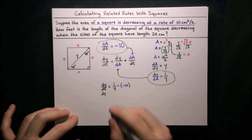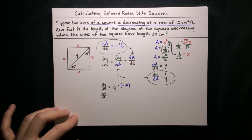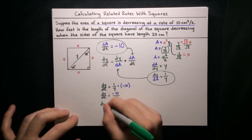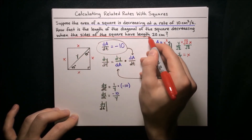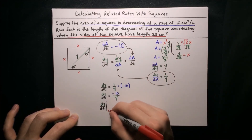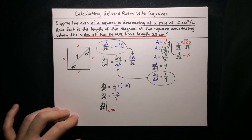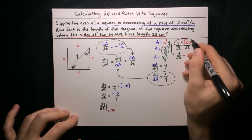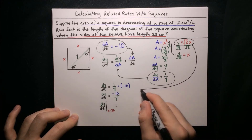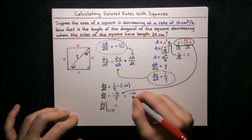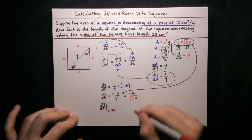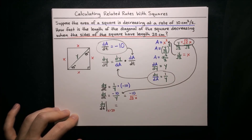Putting this together: dy/dt equals dy/dA times dA/dt, which is 1 over y times negative 10. So dy/dt equals negative 10 over y. We want to find dy/dt when the sides of the square have length 20 centimeters, so when x equals 20. Our formula has y in it, not x, but we already know that y equals root 2 times x. So dy/dt equals negative 10 over (root 2 times x), and now we can substitute 20 for x: dy/dt equals negative 10 over (root 2 times 20).